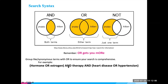Think of your search components as pillars or buckets. You need these pillars, and if any pillar contains more than one word using OR, you need to enclose them in parentheses. You're essentially creating a Venn diagram of topics — for example, hormone/estrogen therapy as one circle, heart disease/hypertension as another, and you're looking only where those meet. Most databases will read that and give you what you want, as long as you're careful with your parentheses.